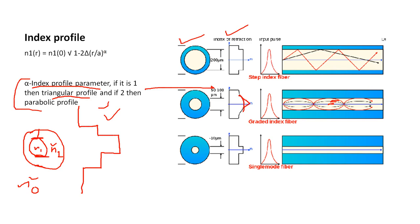Now, why is it known as step index fiber? Because at every step — the first step, the second step, the third step, the fourth step — there is a step discontinuity in the refractive index. 'Index' means refractive index, so there is a step change in refractive index at every boundary. That is why it is known as step index fiber. Why is it called graded index fiber? Because 'grade' literally means change — at the center of the core, the refractive index is not constant; there is a gradual change in refractive index. That is why it is known as graded index fiber.